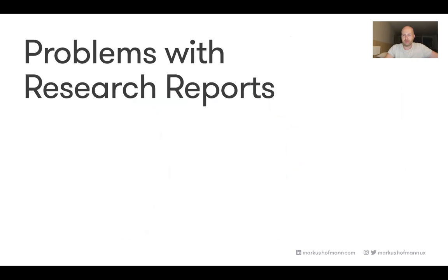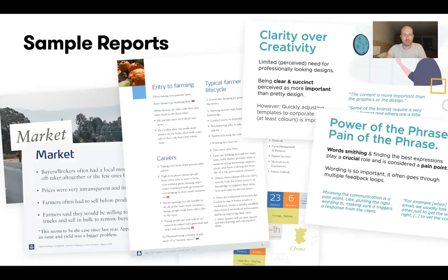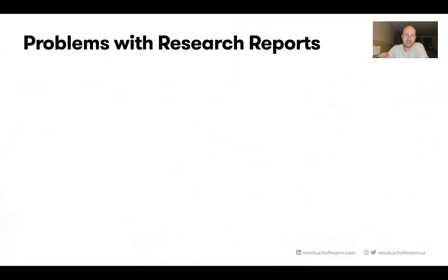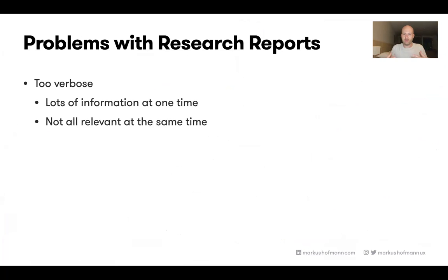Let's explore the problems with research reports. Number one: they're too verbose — too big, too much in them. When you get one, there's so much information at once that you can't even soak it all up. Not all of it may be relevant at the time you receive it, so you tend to forget it — especially when there's so much.